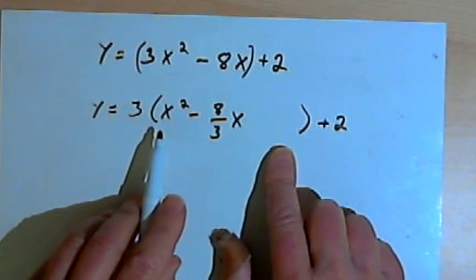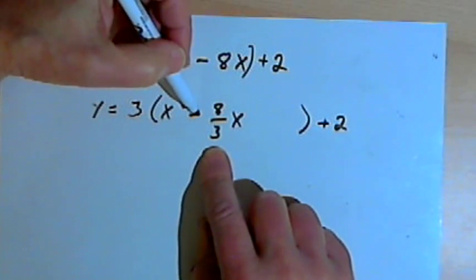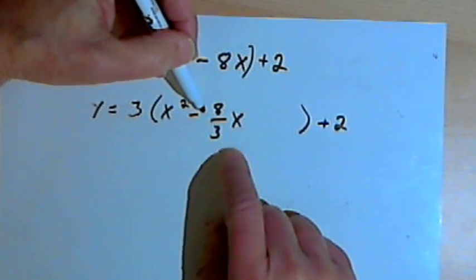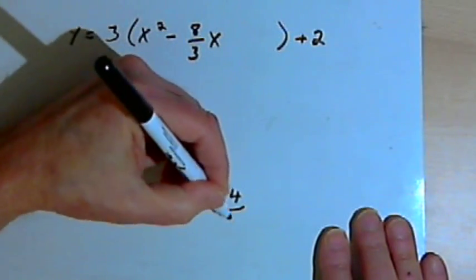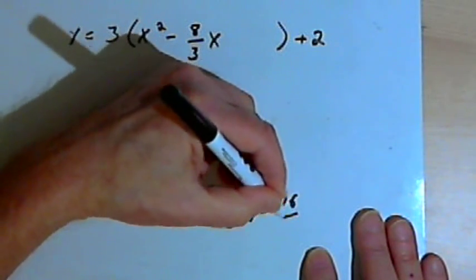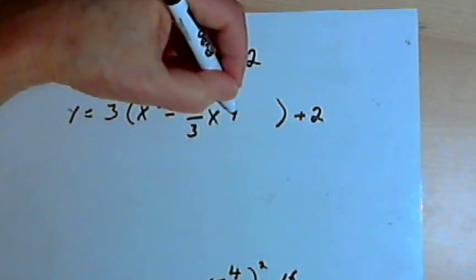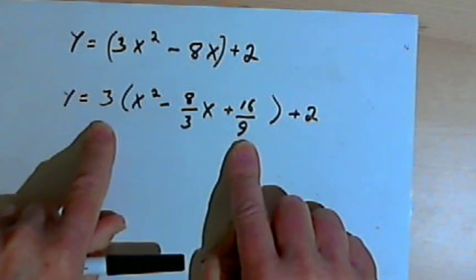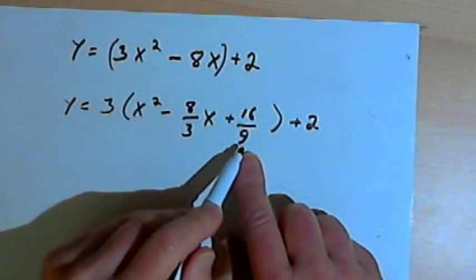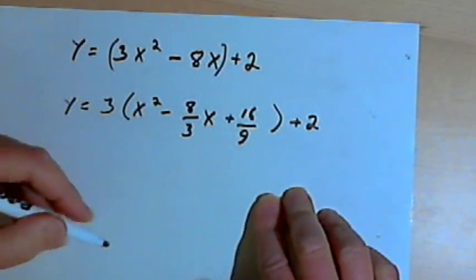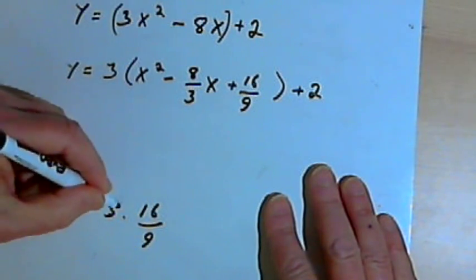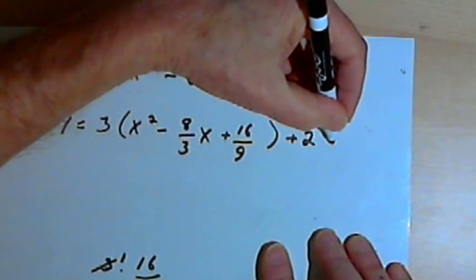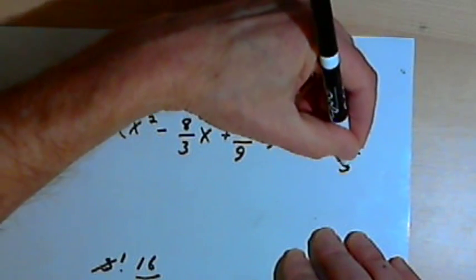Now I want to turn what's inside the parentheses into a perfect square. So I take this minus 8 thirds x, take the coefficient negative 8 thirds, divide that in half — that's going to be negative 4 thirds — and when I square that, I get a positive 16 over 9. So this is plus 16 over 9. Now, I've just added something to this right side, so I want to subtract something as well. I've really added 3 times 16 over 9. I can simplify 3 times 16 over 9 down to 16 over 3. So I've added 16 over 3, and I want to subtract 16 over 3.